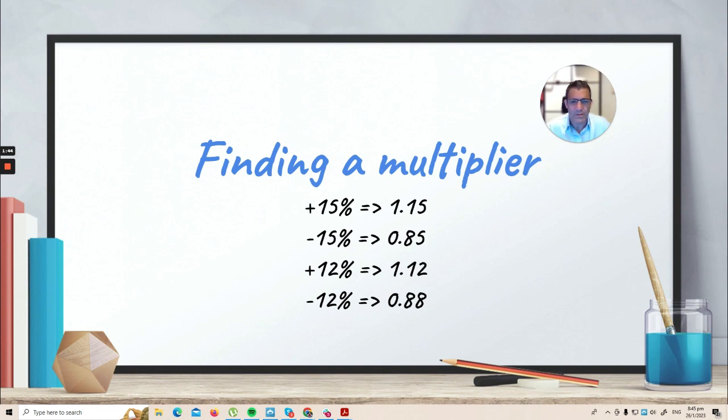So what does it mean to find a multiplier? Well, finding a multiplier is simply adding or taking away from 100%. And so if you wanted to add 15% to 100%, you would have to actually equate it to 115%. And 115% is 1.15. So when you want to add 15% to a number, you multiply by 1.15.